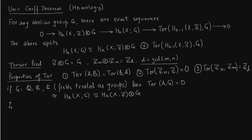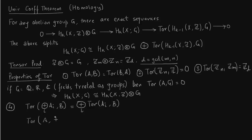Another property of Tor is that direct sums filter out in both the first and second factor — just as with tensor products. These are in principle all the things we will need to compute homology in other groups, and a relevant example is the projective plane, which we will cover on the next slide.